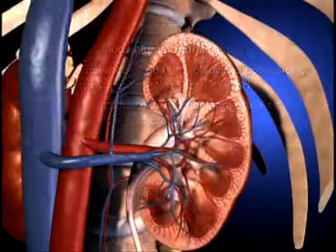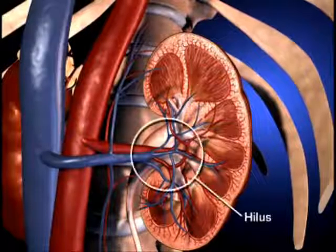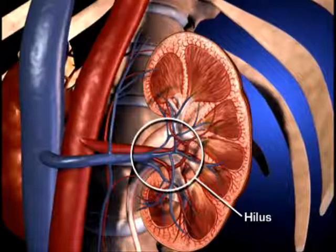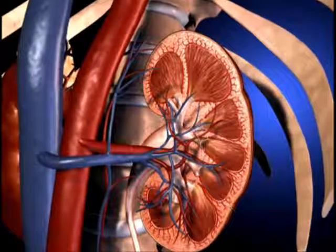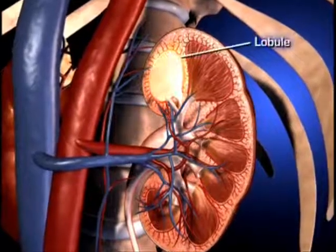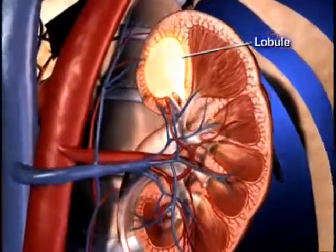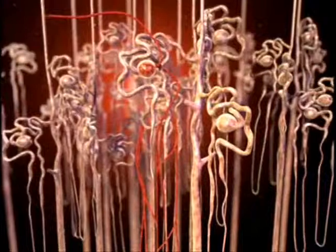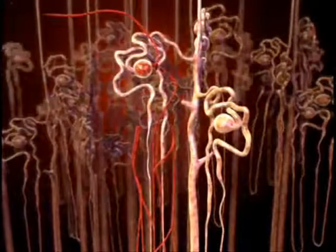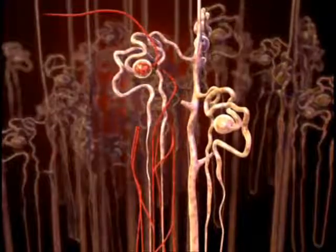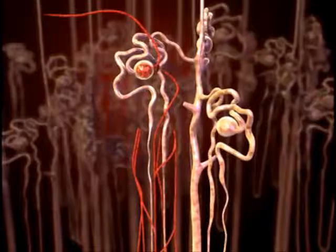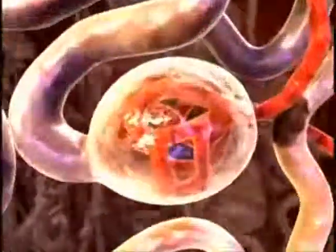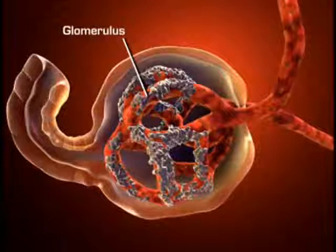The medial border of the kidney is indented by a deep fissure called the hilus, where the blood vessels, nerves, and ureters connect to the kidney. The kidney is composed of up to 18 lobes. Each lobe is composed of nephrons. Nephrons are the functional units of the kidney, and each kidney contains more than one million nephrons. Each nephron consists of a glomerulus and a system of tubules.